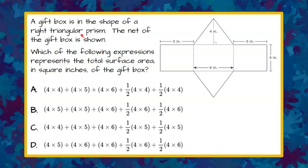A gift box is in the shape of a right triangular prism. The net of the gift box is shown. Which of the following expressions represents the total surface area in square inches of the gift box?